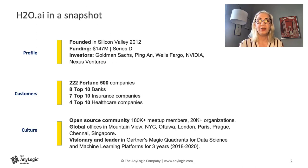H2O.AI was founded in 2012. We are currently in Series D funding. Among our customers, we count almost half of Fortune 500 companies, eight top 10 banks, seven top 10 insurance companies, and four of the top 10 healthcare companies. We love our open source community, and our open source community loves us back. We are a truly global company with multiple offices in three continents. We have been named visionary and leader in Gardner's Magic Quadrant for data science and machine learning platforms for three consecutive years. Other recognitions and awards include, but are not limited to, the Forrester Wave Automation Solutions Award, as well as the InfoWorld Technology of the Year Award.